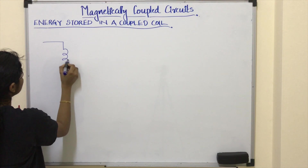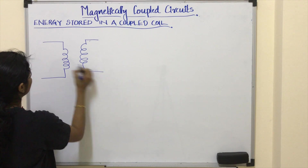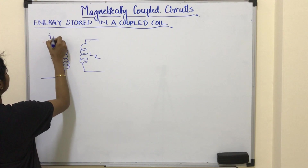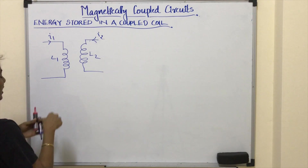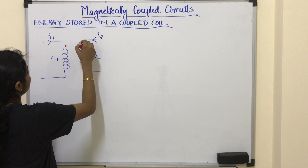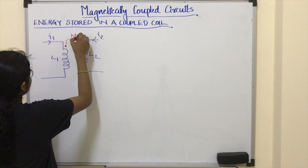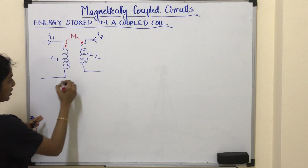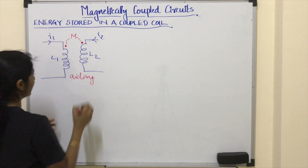Here I am going to consider two coils L1 and L2, and I1 and I2 are the currents passing through these two coils. I am going to mark a dot on the entering side of coil 1 and the entering side of coil 2, which means the mutual flux is aiding in nature. This is a case of aiding coupling.